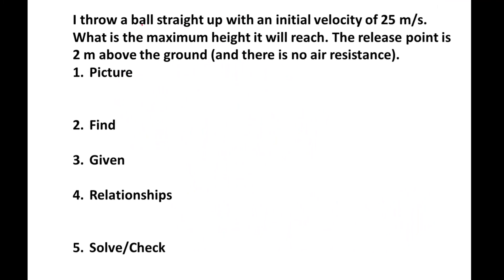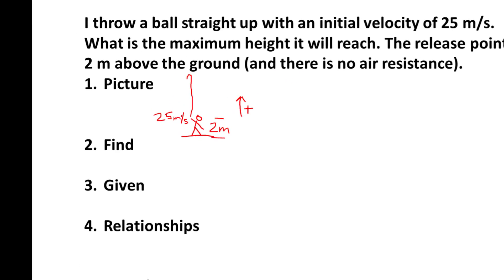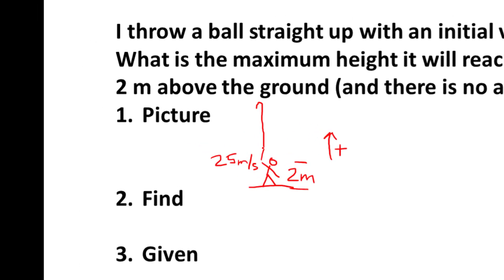And this one, I throw a ball straight up with an initial velocity of 25 meters per second. What is the maximum height it will reach? The release point is 2 meters above the ground, and there is no air resistance. Let's go ahead and I'll draw a drawing here.